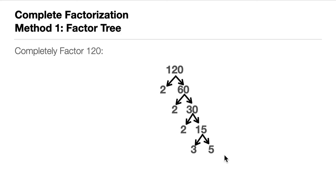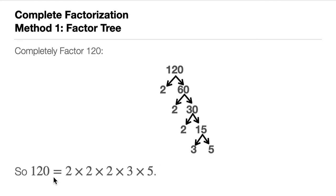We end our tree here because 3 is already prime and 5 is already prime. We stop the tree when all the numbers are prime. Looking at all the endpoints where there's no further extension, they are all prime numbers: 2, 2, 2, 3, and 5. So we can say 120 equals 2 times 2 times 2 times 3 times 5 — that is the prime factorization or complete factorization of 120.